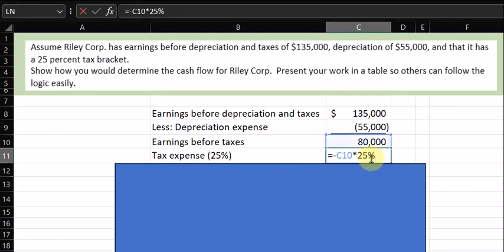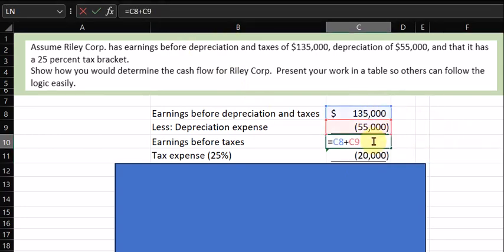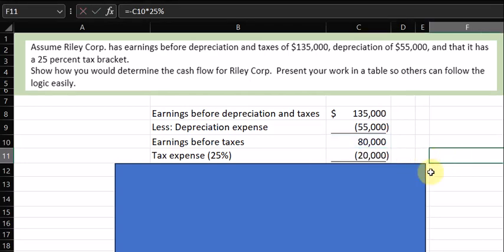All I'm doing is multiplying the line above times 25%. You can see the logic here, or you can see it up here. If you want me to step through in Excel, you'll see earnings before tax. I'm adding the positive and the negative number to come up with earnings before tax, and we multiply times 25%.